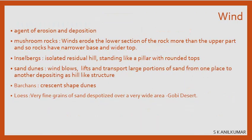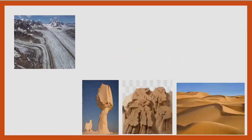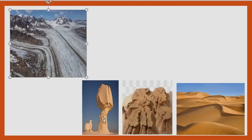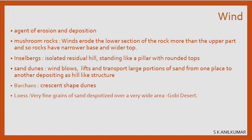Wind is an agent of both deposition and erosion. A glacial moraine is the glacier equivalent of a delta or flood plain — the fertile sediments deposited by the glacier. When wind blows on a mountain, it moves at higher speed at lower levels and lower speed at higher levels. Because of greater erosion at lower levels, the rock is cut away more there, giving rise to a mushroom-shaped rock formation called a mushroom rock.